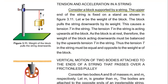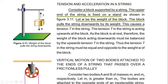First we will consider a block that is supported by a string. The upper end of the string is fixed on a stem. We have this block attached to a string, and this string is attached to a stem. Let W be the weight of the block, acting vertically downward. When we attach the block to the string, the string stretches out. The more weight, the more it stretches. This stretching of the string is what we call tension.